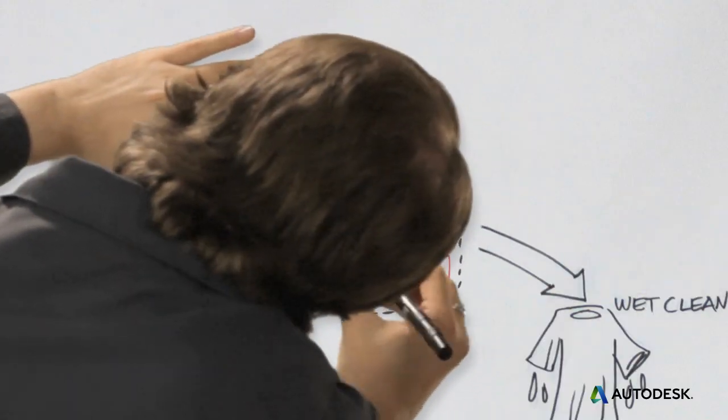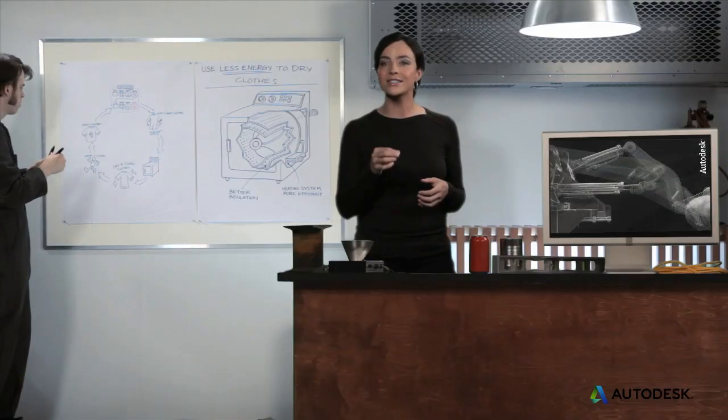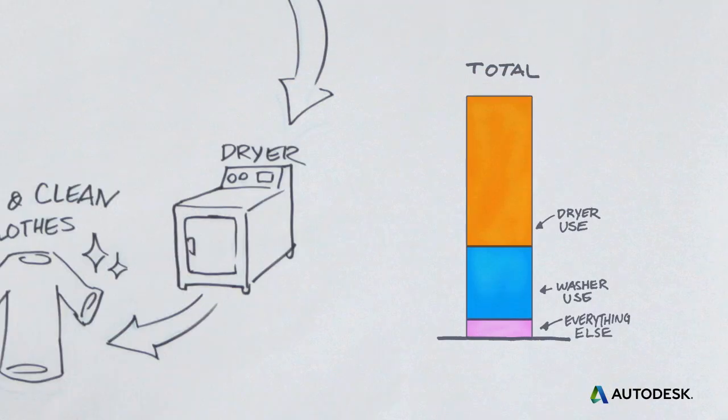And here's a chance to innovate. A washing machine with a more effective spin cycle might use slightly more energy but lets the dryer save a ton more. It turns out that the solution for a more sustainable dryer is a slightly more energy intensive washing machine.